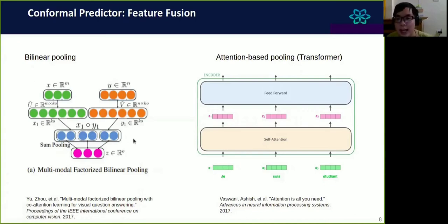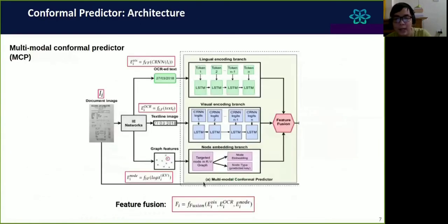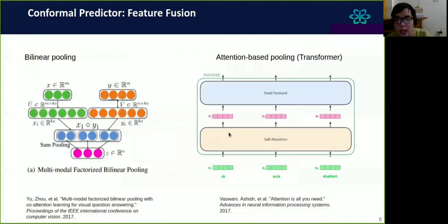The second type of advanced feature fusion technique is attention-based pooling or transformer pooling. Basically, the transformer has some advantages on parallel processing. It can attend each input token to the whole input sequence. We treat each input token as the output vector from each embedding encoding branch. The output will be concatenated into the final output vector.